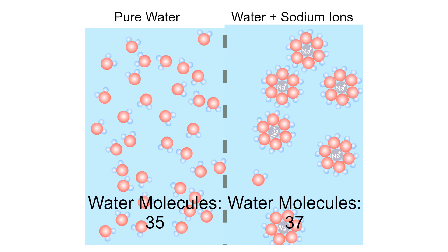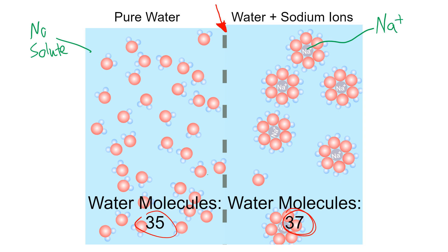Here's a simulation we'll look at in class. We've got two samples of water with a selectively permeable membrane in the middle — imagine this is like the plasma membrane of a cell. We've got roughly the same number of water molecules on each side, 35 to 37. On the left we have no solute, so all 35 water molecules are free to move. On the right we have sodium ions dissolved in the water, and when something dissolves, water molecules surround those solute particles and are no longer free. So really there's only about one free water molecule on the right.